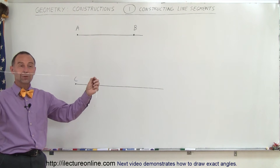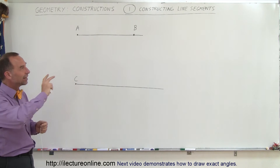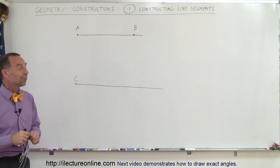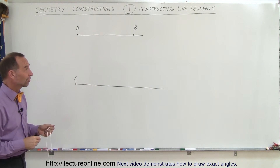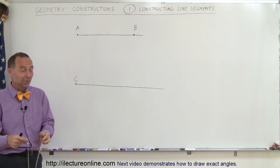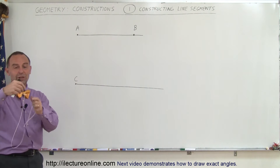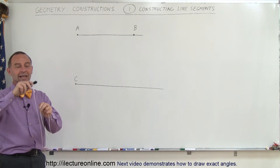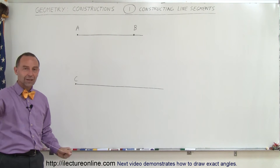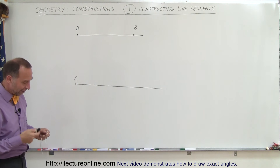For a compass, we're simply going to use a string here because I don't have a compass large enough to use on the board. But you'll see in just a moment how this works just as well — and you could actually use it on a piece of paper too. All you need is a string with a little loop so you can put your pen in it and make arcs.